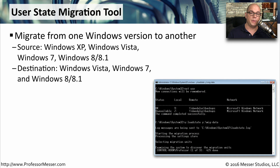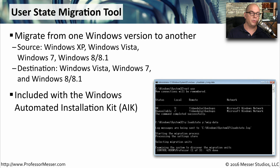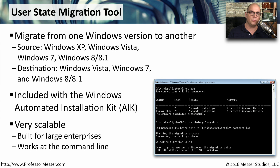Another way to migrate is by using USMT, which is the User State Migration Tool. Again, we're migrating from one Windows version to another — you can go from Windows XP, Vista, 7, and 8 to Windows Vista, 7, and Windows 8.1. The User State Migration Tool is included with the Windows Automated Installation Kit, the AIK. It runs at the command line, is very scalable, and is commonly used across large enterprises to migrate many systems simultaneously.